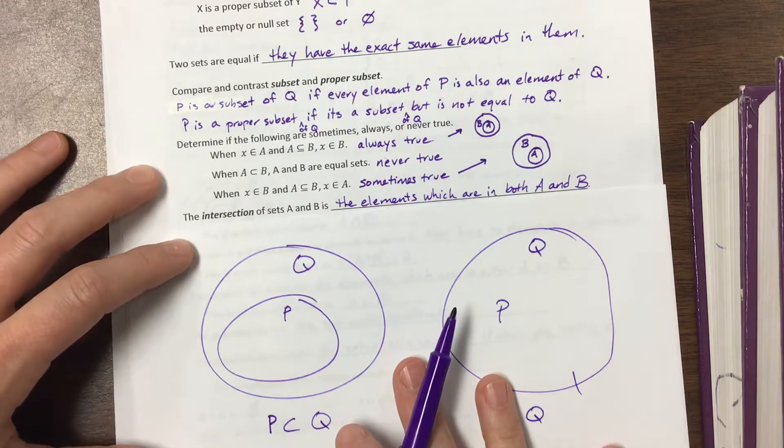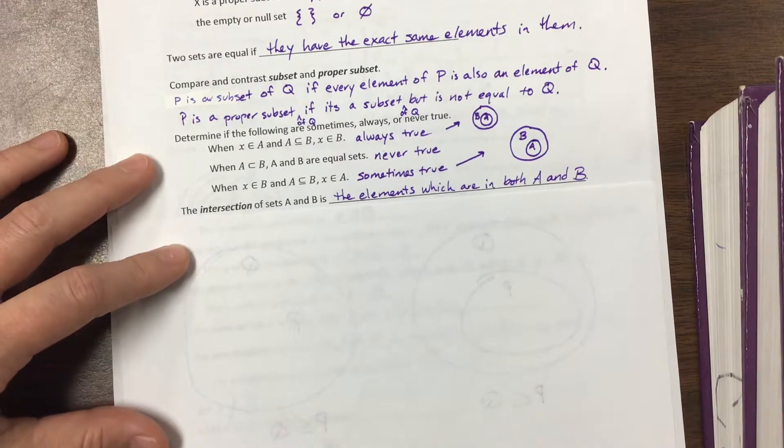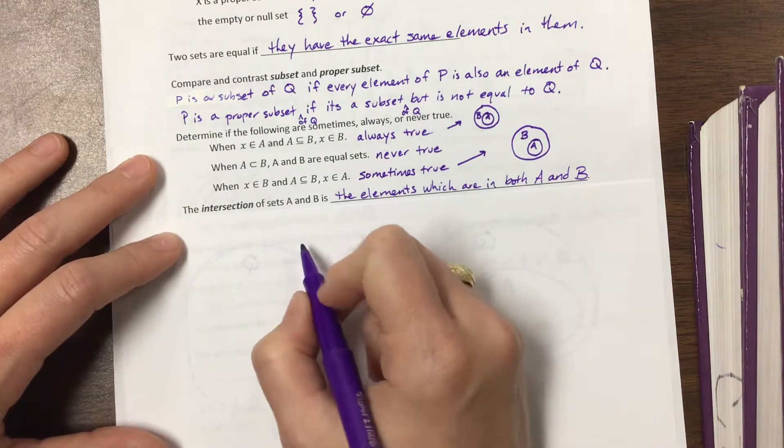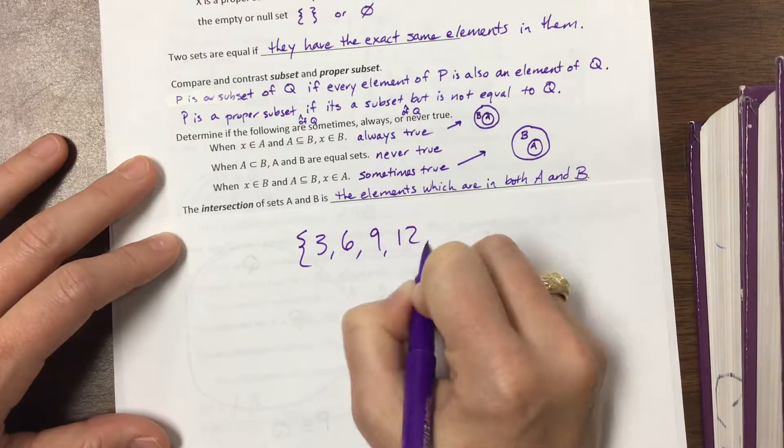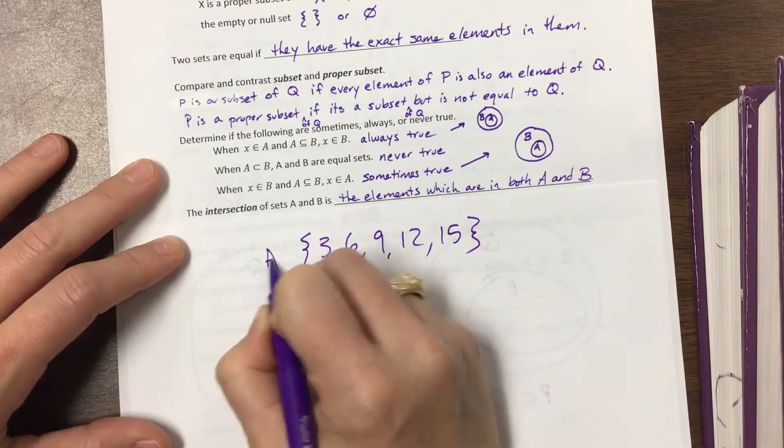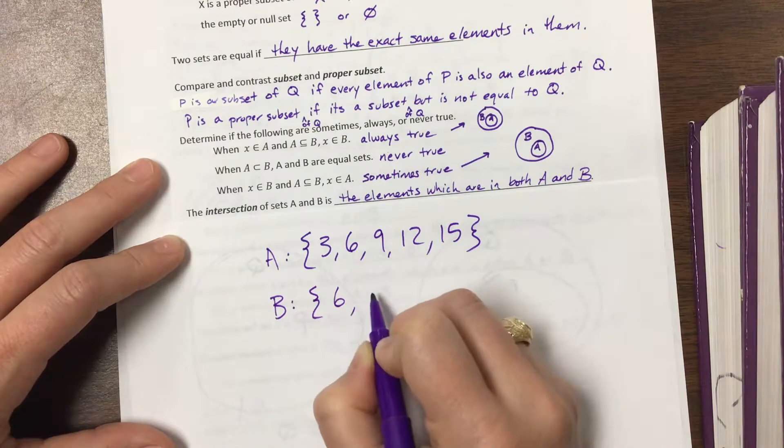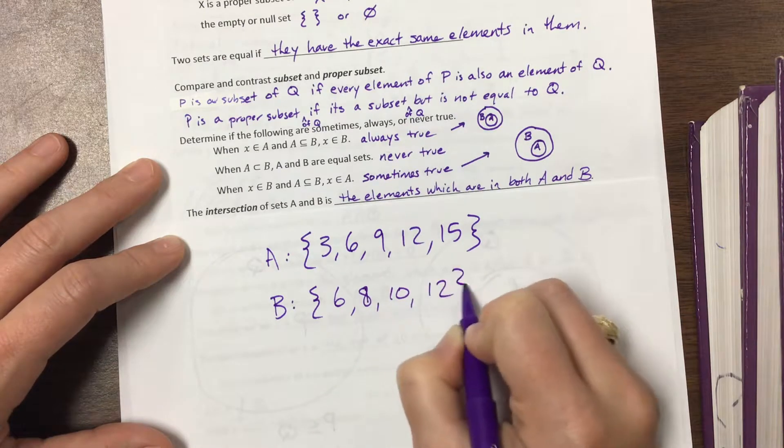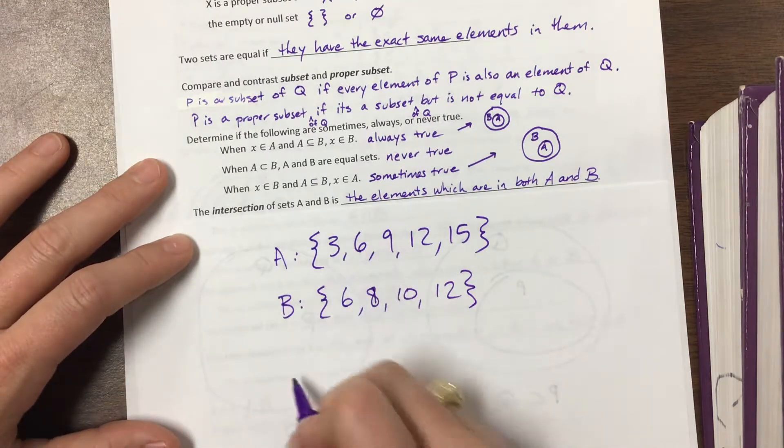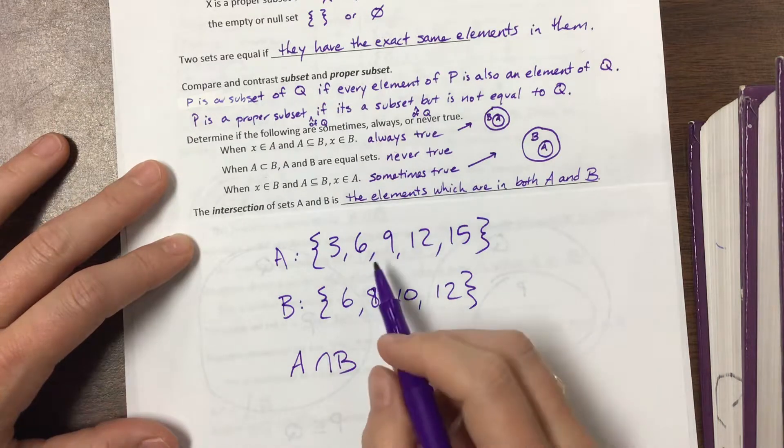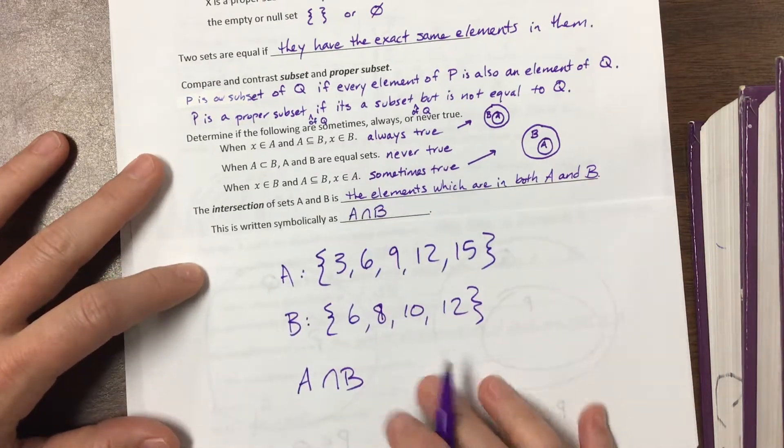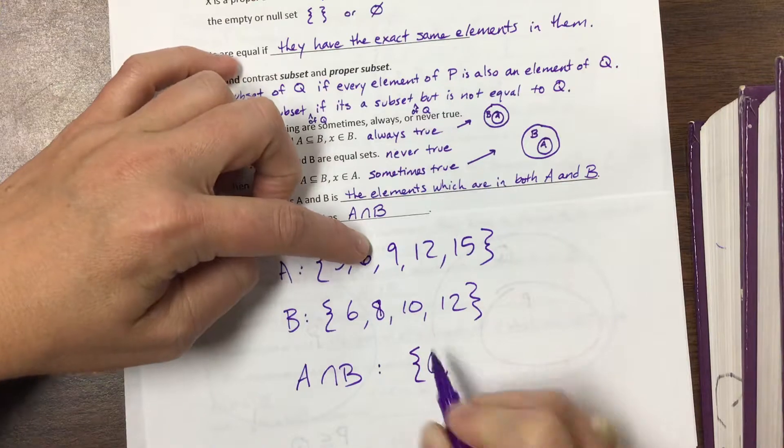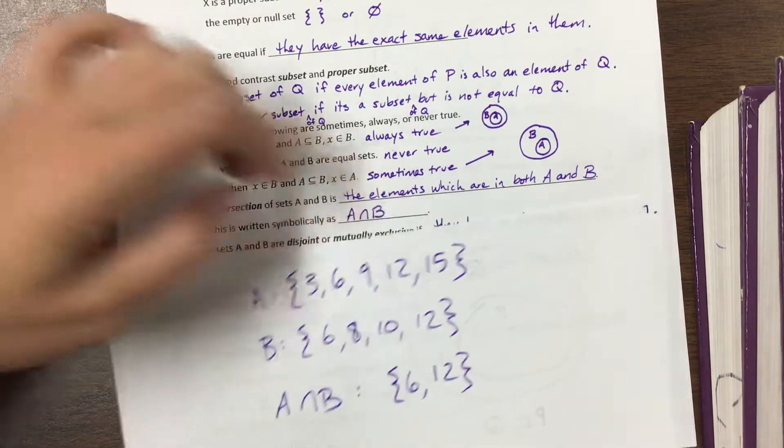The next one, it says the intersection of sets A and B is the elements which are in both A and B. So do you remember a minute ago I was writing {3, 6, 9, 12, 15}, this is set A. And then I said set B is equal to {6, 8, 10, 12}. If I want to find what's in the intersection, then I can say A intersects B. That's going to be the stuff that are in both A and B, and that's written like this, A intersect B. It's kind of an upside down U. And that would be the set, well, 6 shows up in both, 9 does not, 12 does. So that would be {6, 12}.